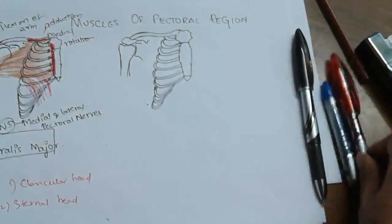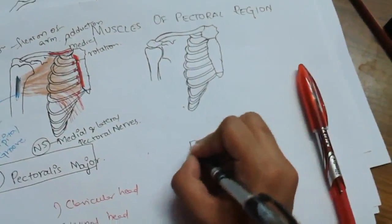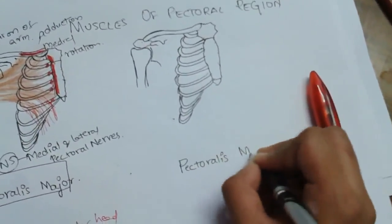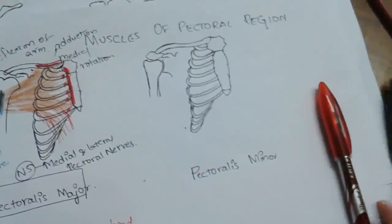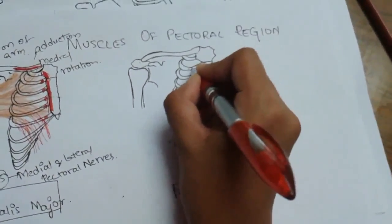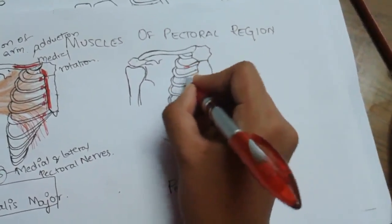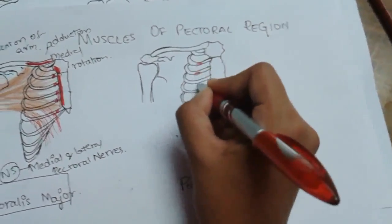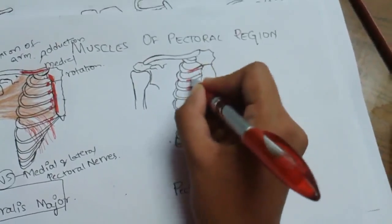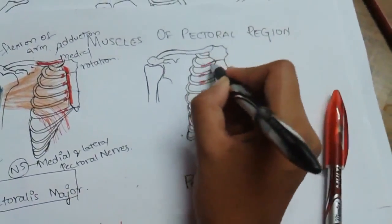The second muscle of the pectoral region is pectoralis minor. Its origin is from the 3rd, 4th, and 5th ribs. This is the origin of pectoralis minor.